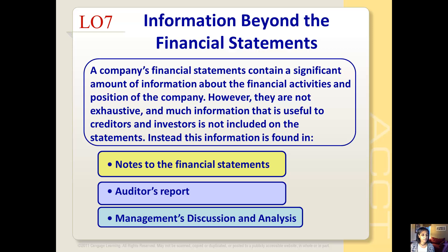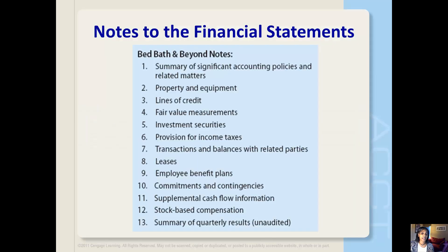We looked at the income statement, the balance sheet, and now the statement of retained earnings. What else can we find out about the company beyond the financial statements? A company's financial statements contain a significant amount of information, however they don't tell us everything. Much information useful to creditors and investors is not included in those financial statements. Instead, that information is in additional documents: the notes to the financial statements, the auditor's report, and the MD&A — management's discussion and analysis.